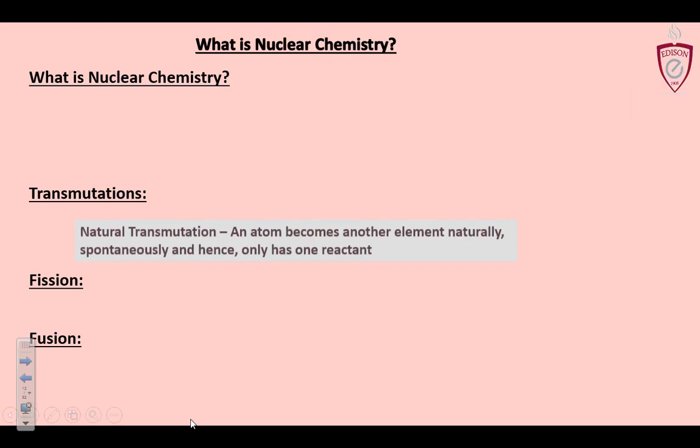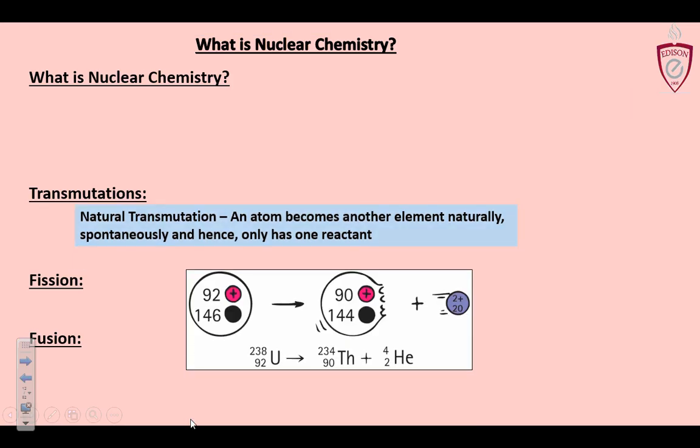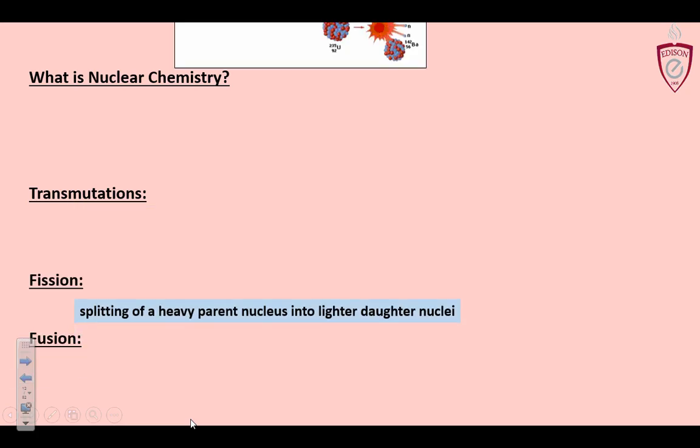So transmutation, what is that? It's naturally occurring, it's when an atom becomes another element naturally, spontaneously and therefore only has one reactant. This is occurring around you all the time and it doesn't hurt you. It happens with you, carbon-14. My atoms have carbon, some of my atoms are carbon-14 and they're naturally radioactive and they will naturally turn into not carbon-14, something else. Nitrogen-14 I think is what it does. That's later on.